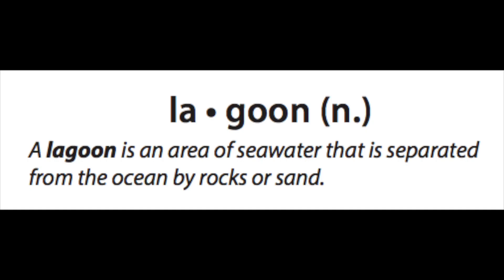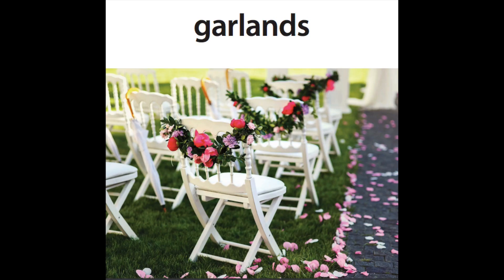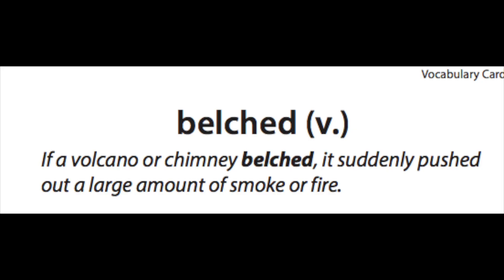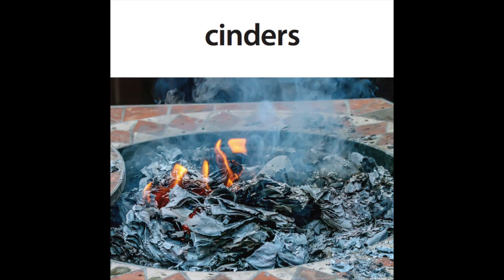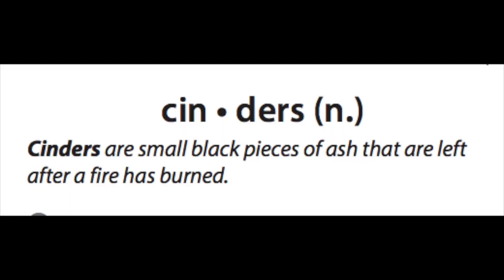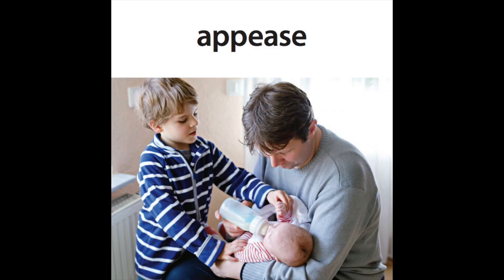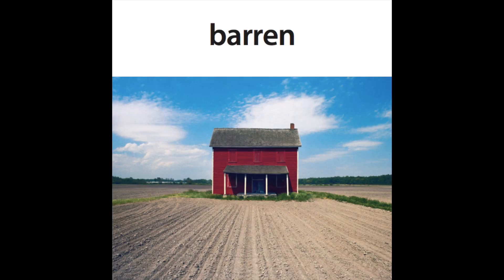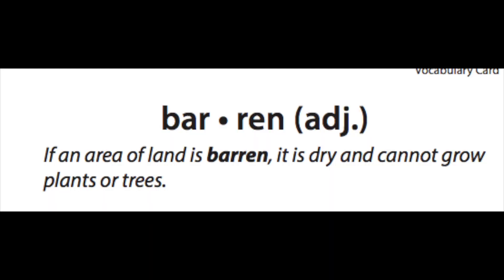Lagoon: an area of seawater that is separated from the ocean by rocks or sand. Garlands: ropes made of flowers or leaves. Belched: if a volcano or chimney belched, it suddenly pushed out a large amount of smoke or fire. Cinders: small black pieces of ash left after a fire has burned. Appease: if you appease someone, you try to make the person less angry by giving in to what he or she wants. Barren: if an area of land is barren, it is dry and cannot grow plants or trees.